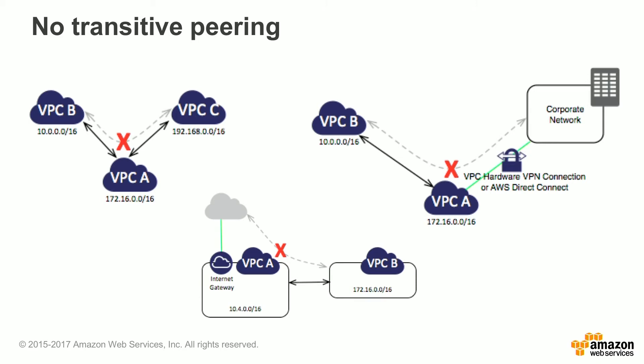An important thing to understand about VPC peering is the idea of transitive peering — it does not work within the VPC. In this example, VPC A has a peering agreement with both VPC B and VPC C. This allows VPC A to talk to both of those VPCs. It does not, however, allow VPC B to talk to VPC C, either directly or through VPC A. For VPC B to communicate with VPC C, it would actually have to create an additional VPC peering request.